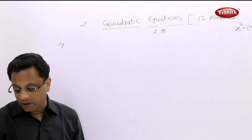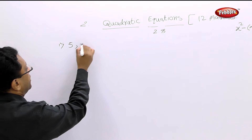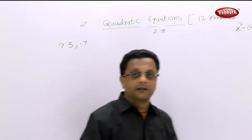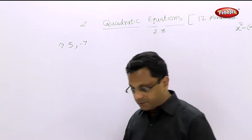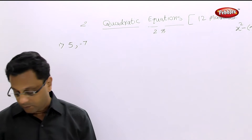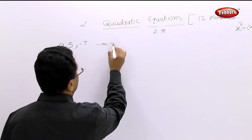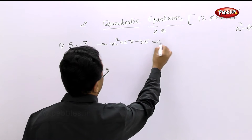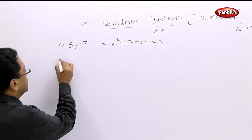The first example: the values are given as 5 and minus 7. Pause the video and solve this. Alpha is 5, beta is minus 7. The answer is x squared plus 2x minus 35 equal to 0. I am not going to solve such simple examples in detail.